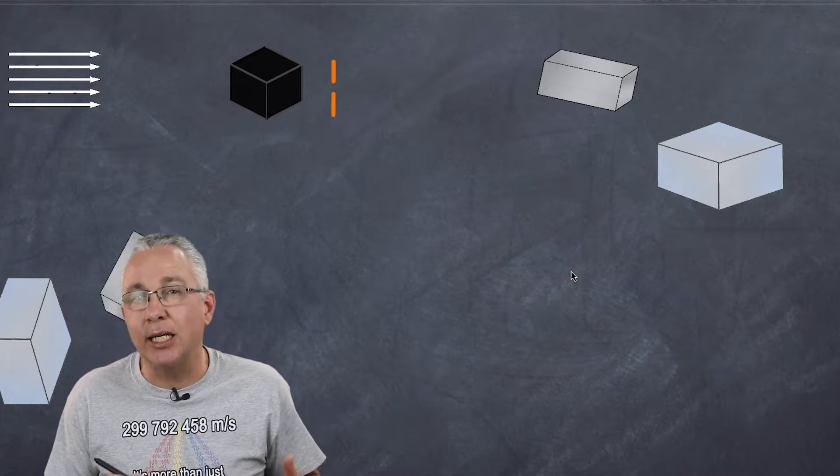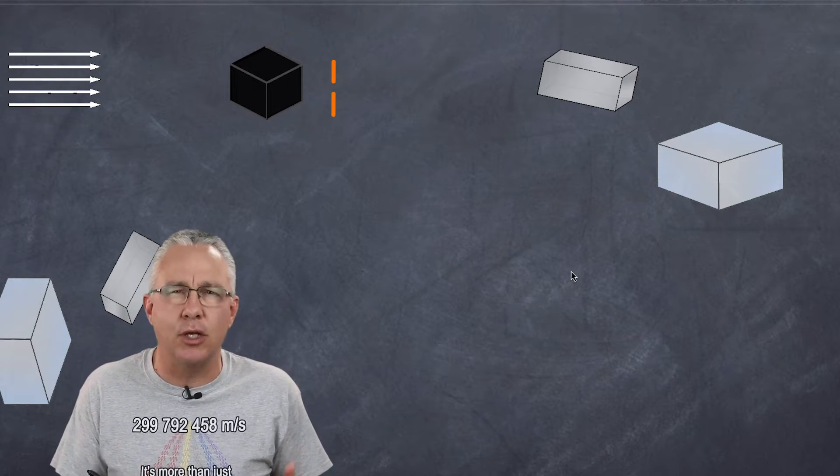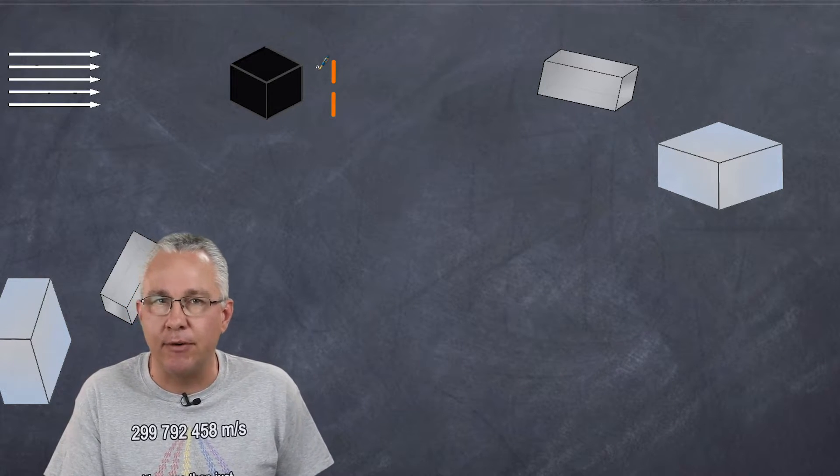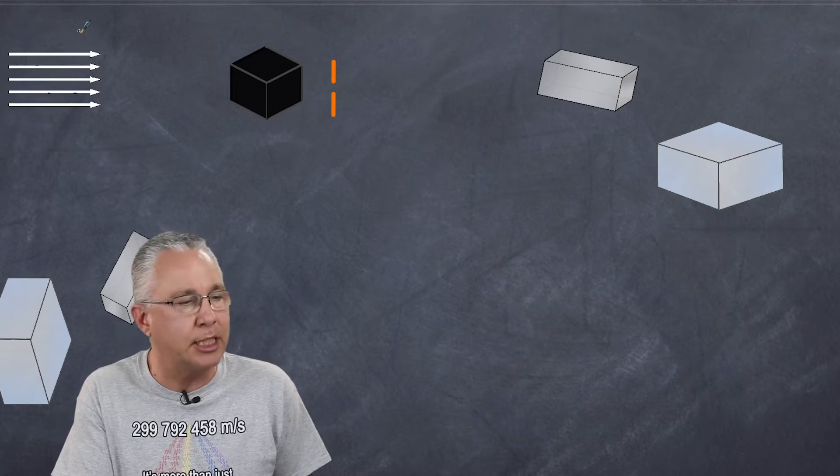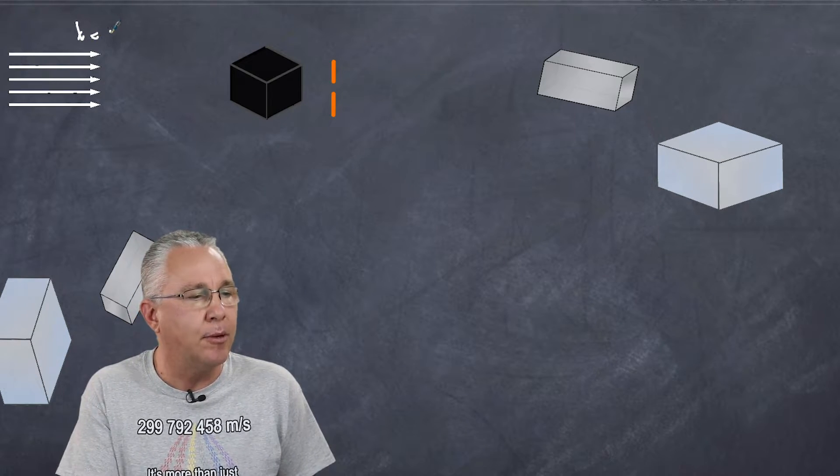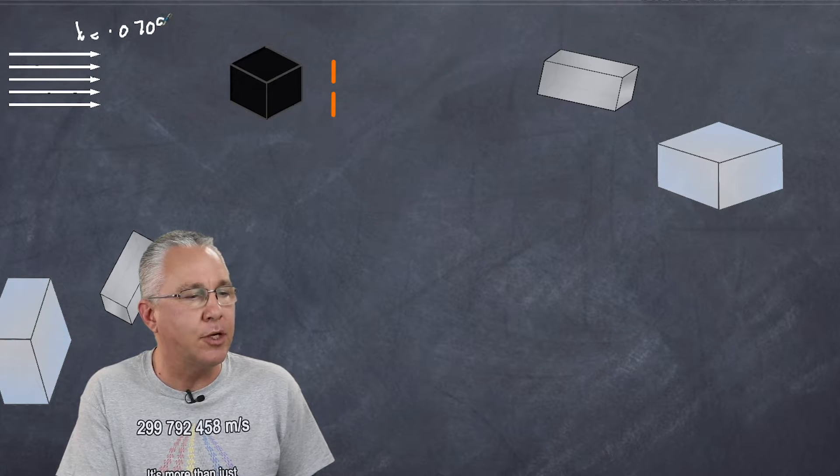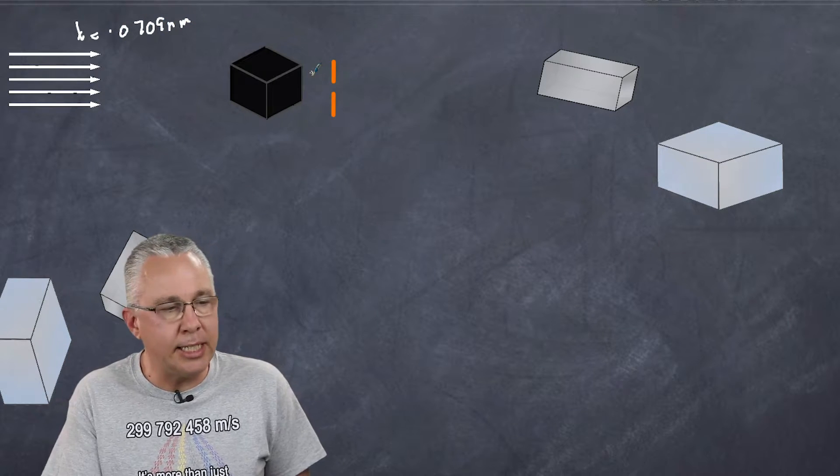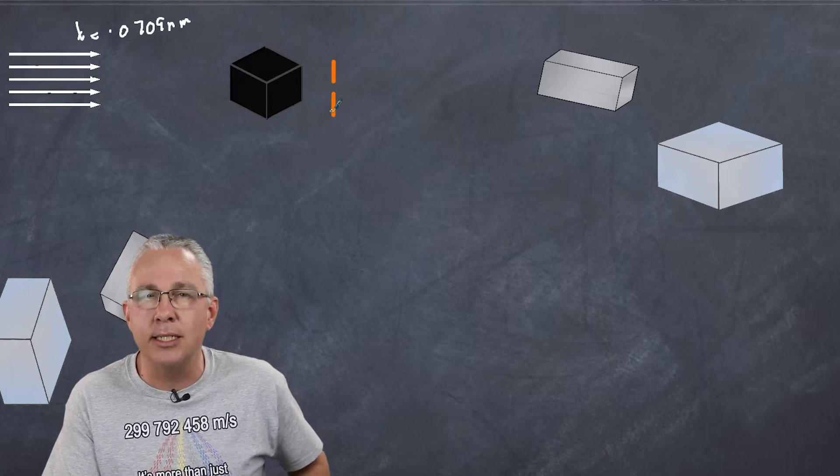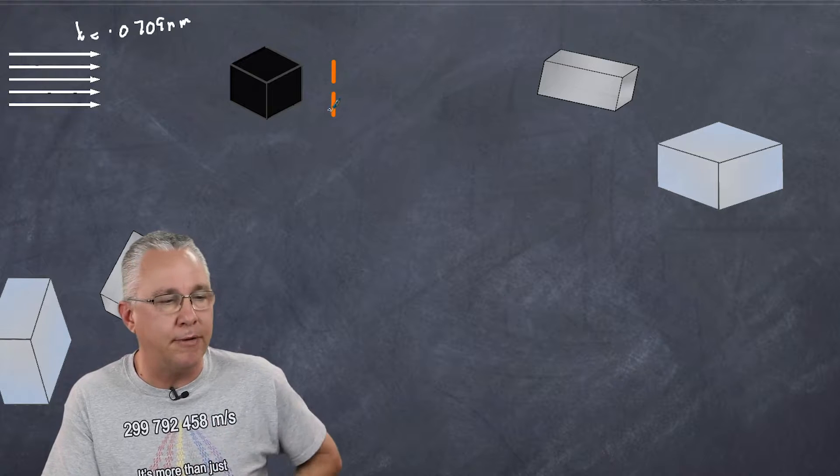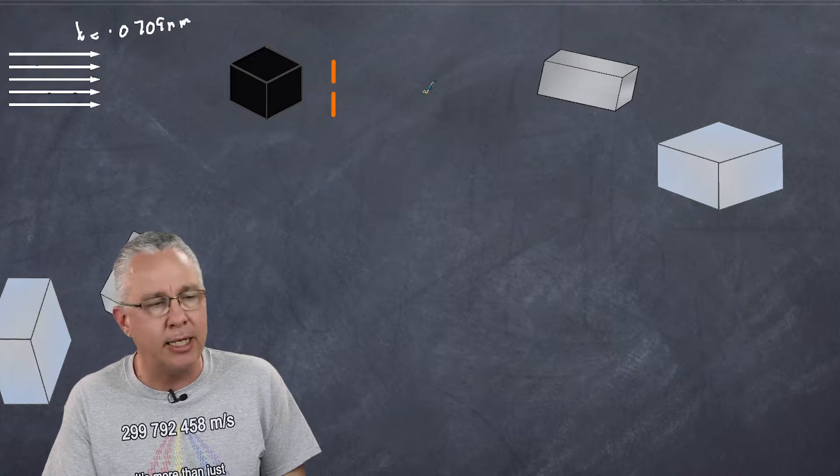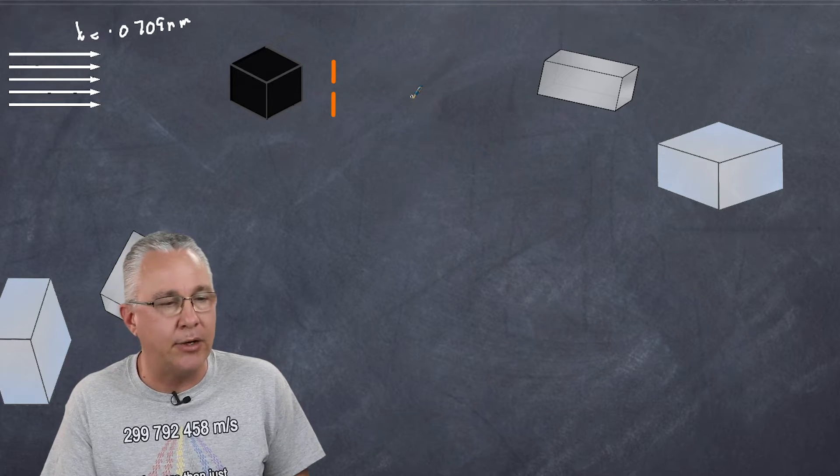So let's start by looking at Compton's experimental setup and see the results that he got. So here we have our incoming X-rays and they're going to be striking a graphite sample. Now in the case of Compton's experiment, he had X-rays that were produced at a wavelength of 0.0709 nanometers. Then he set up a series of slits, which in essence is a collimator.